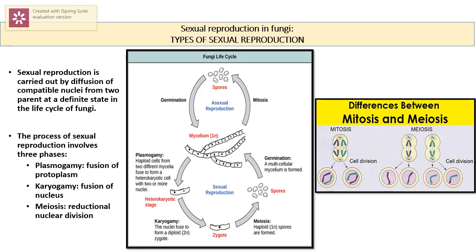After the heterokaryotic stage, both nuclei present in the cytoplasm fuse together in the second stage called karyogamy — the fusion of nuclei — to form a diploid zygote (2n). After zygote formation, the third stage is meiosis, which is a reductional division of the nucleus, resulting in the formation of haploid spores.